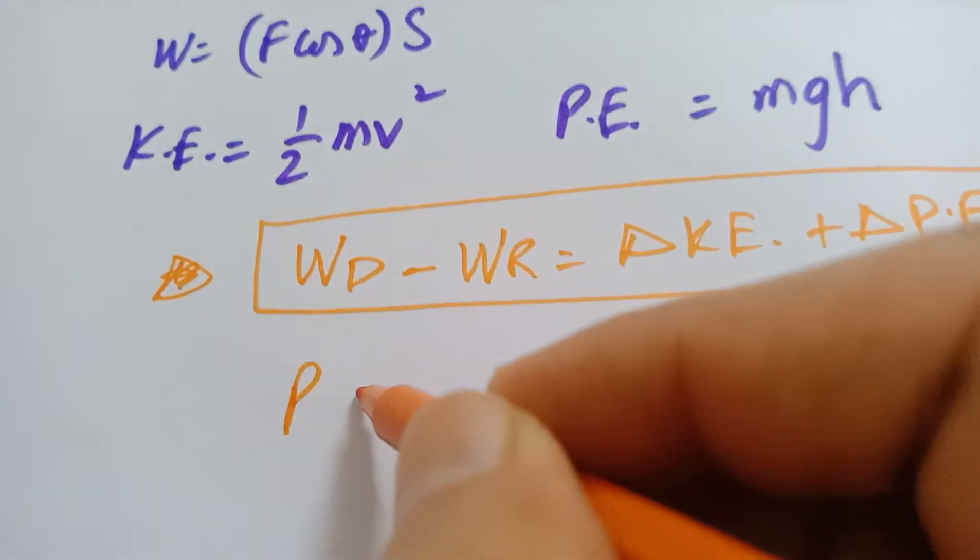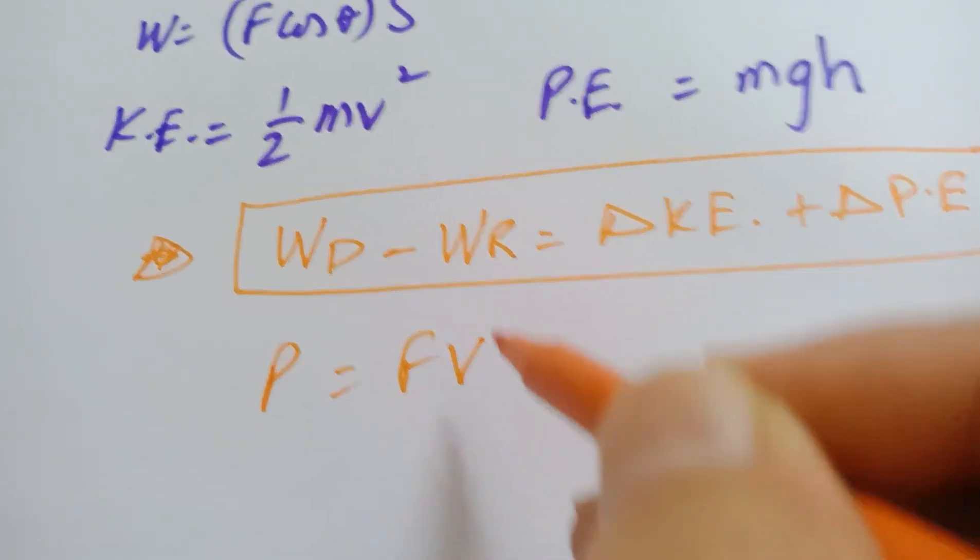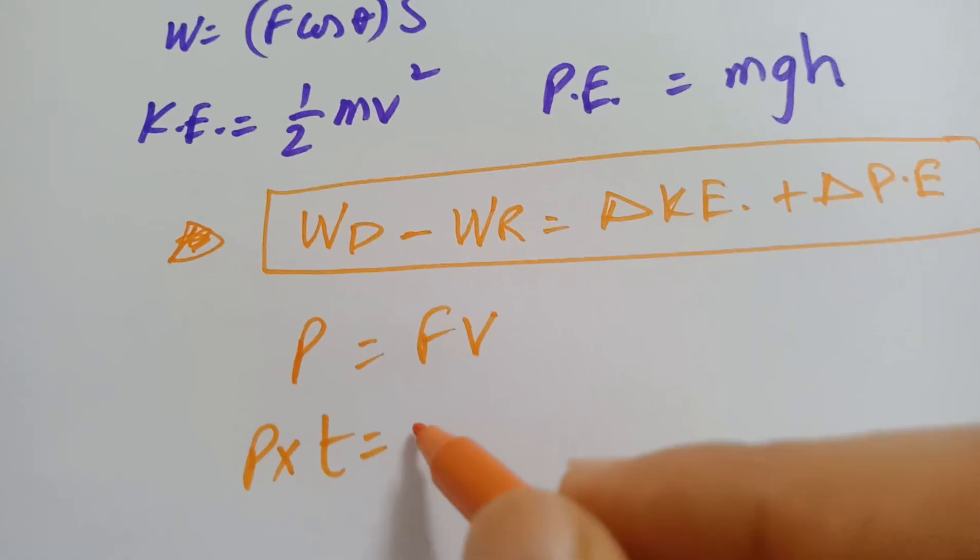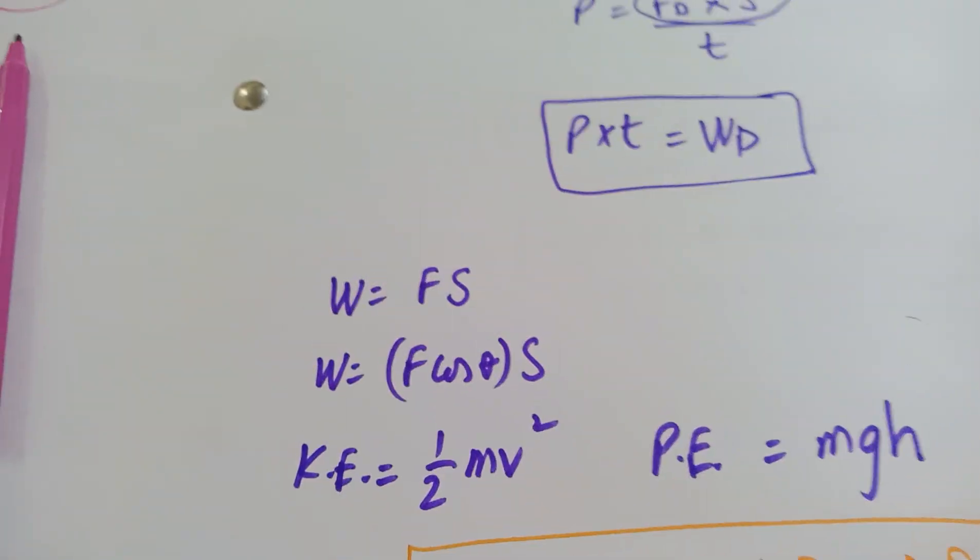Then we have the formulas for the power. Power is equal to F into V and I just told you that power time T that is equal to the work done by the driving force.